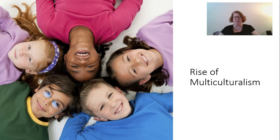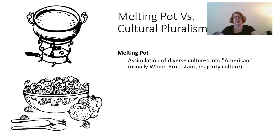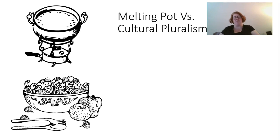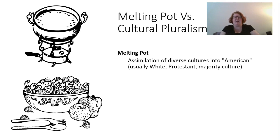Let's look at multiculturalism. The first thing I want to talk about is the idea of a melting pot versus cultural pluralism. You may have heard the saying that America is a melting pot, and that's really a view that's pretty outdated. It really assumes assimilation — that if we put all of these different cultures together, we get one kind of homogenous, similar culture. It's like putting different types of cheese into a fondue pot: it all melts together and creates one consistency, all the same.